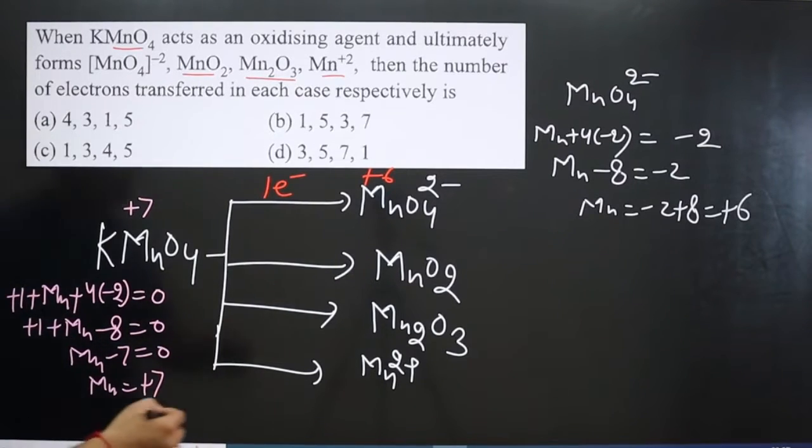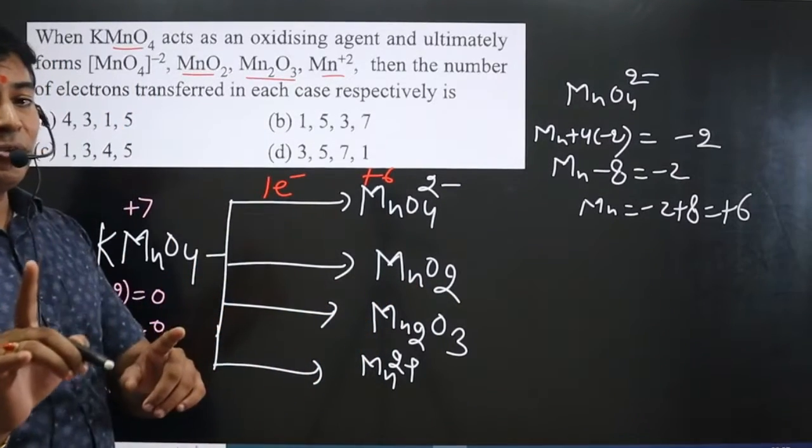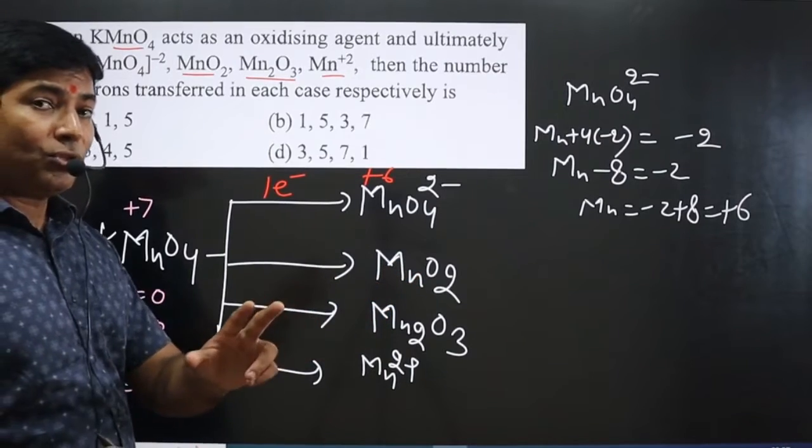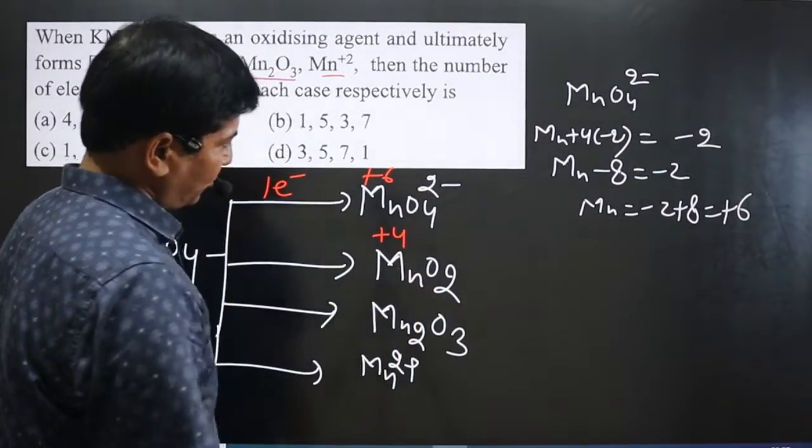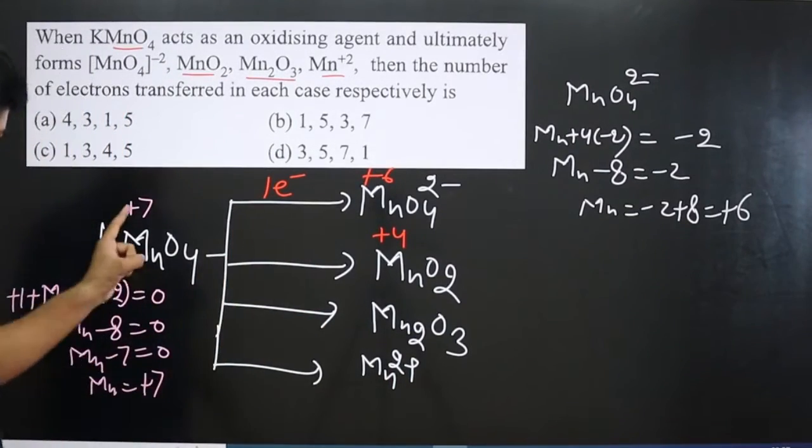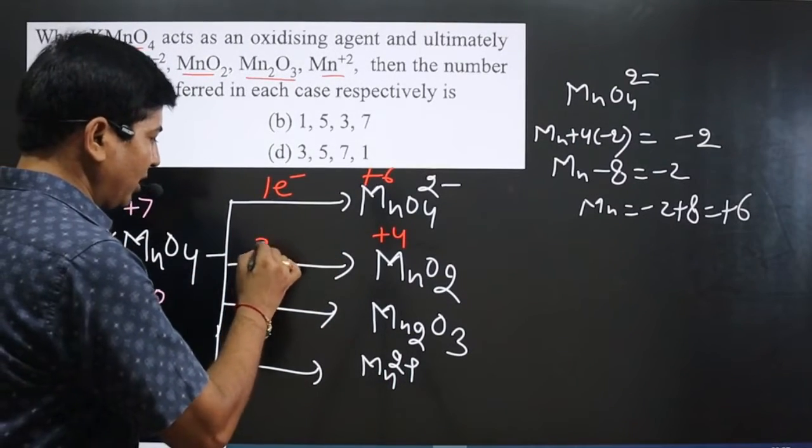Now move on to the next one. It is MnO2. Each oxygen is -2, there are 2 oxygen, 2 times 2 is 4 minus 4. So total positive charge should be +4. Below 7, so 7 - 4 = 3 electron transfer.